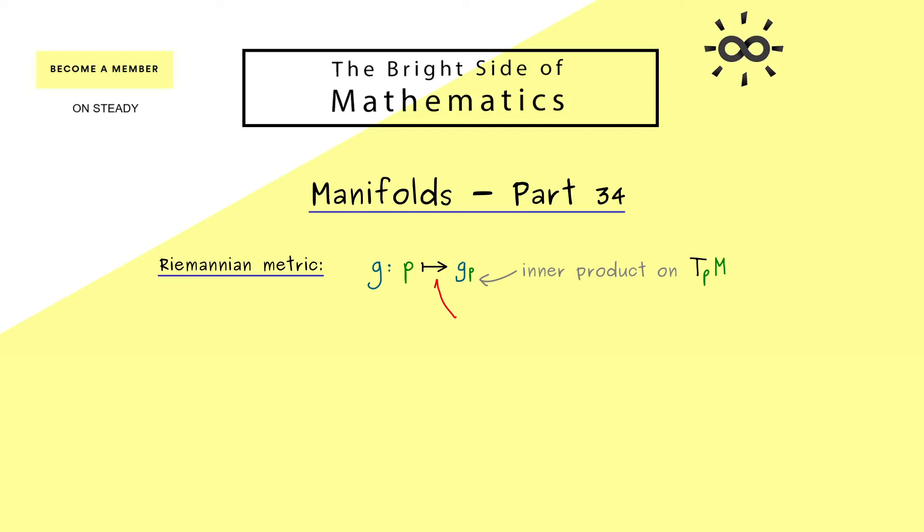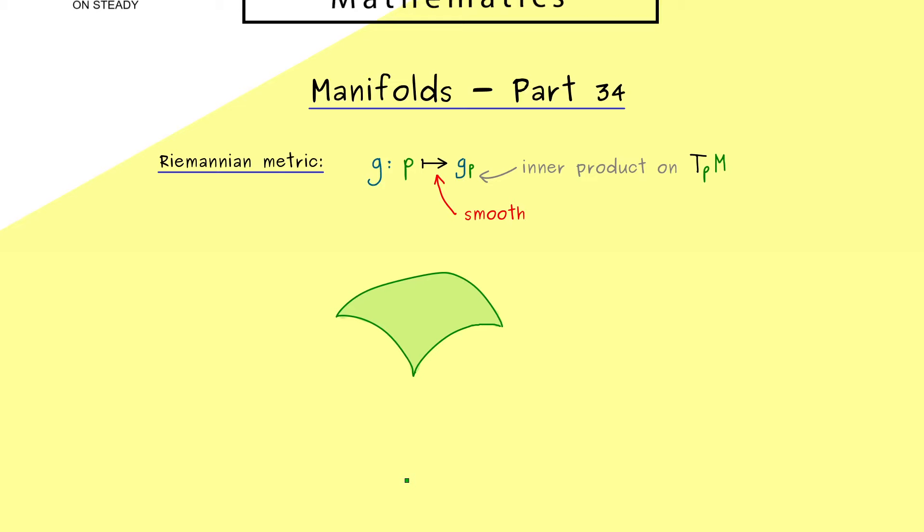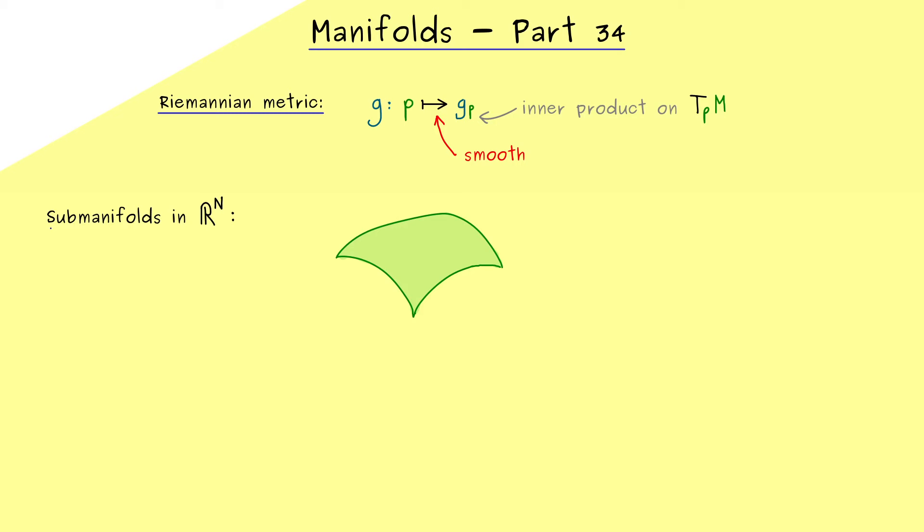And as usual, the first examples we should consider are submanifolds in R^N. They are easy to visualize and they should also already carry some geometry. In other words, there we already should have a canonical Riemannian metric. And now in order to keep the notation clear, let's say that this submanifold lives in R^N.